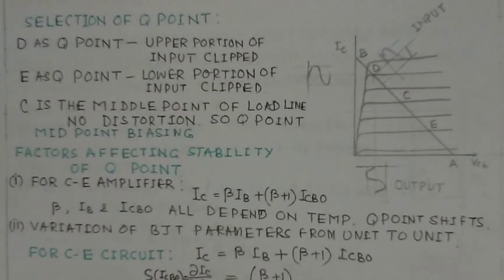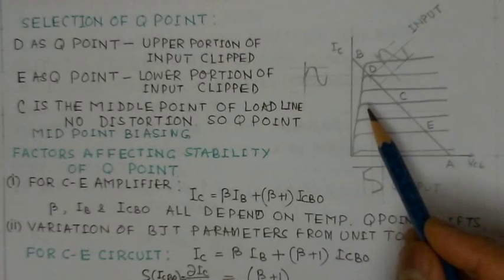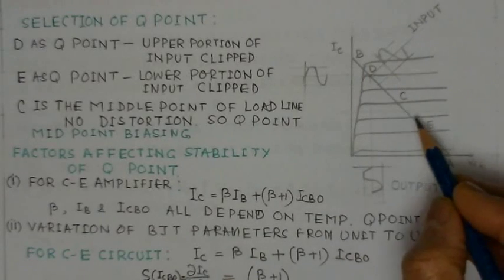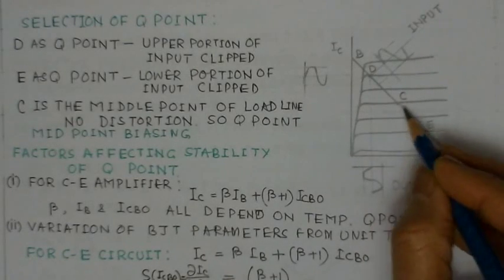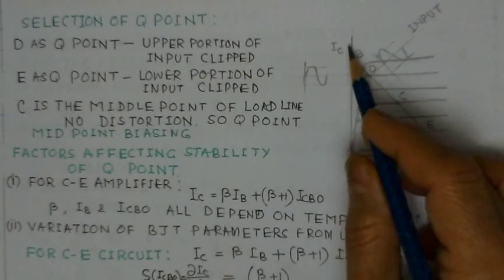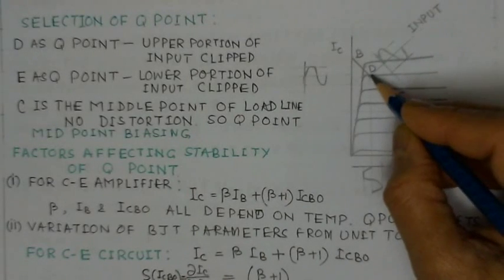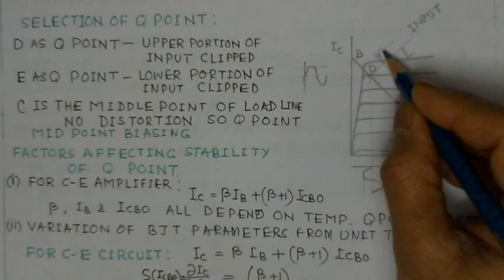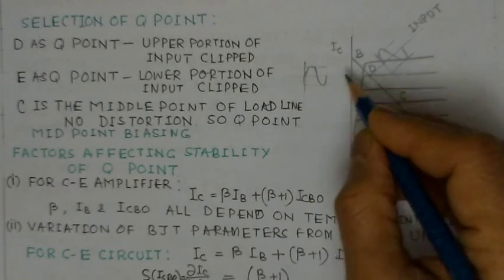For Q point selection, three Q points have been marked on the DC load line AB, plotted on IC versus VCE characteristics. When we take point D as the operating point, we observe that the upper half cycle of the input gets clipped off due to the transistor entering saturation.